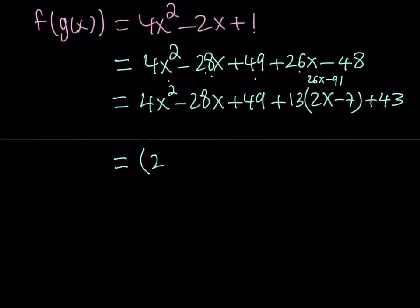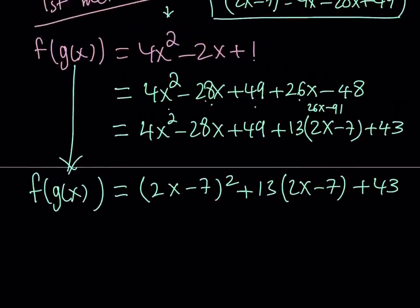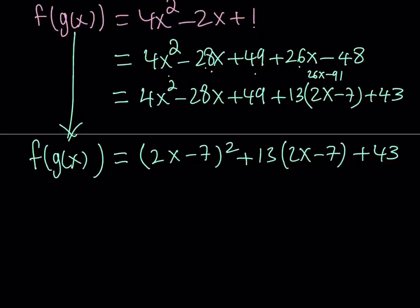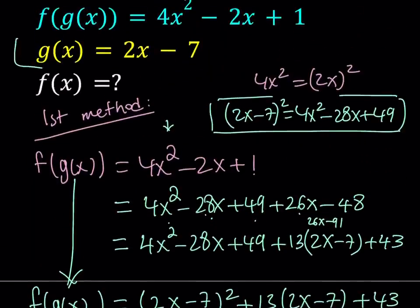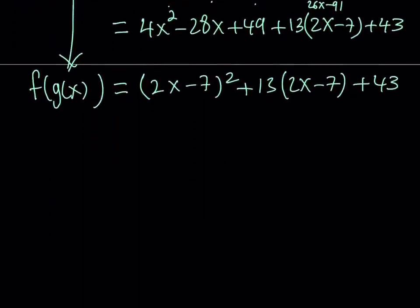So the first three terms can be written as 2x minus 7 quantity squared, and then 13 times 2x minus 7 plus 43. So this is f of g of x. Our goal is to find f of x. But why did we use 2x minus 7? Because 2x minus 7 is g of x. A lot of times we replace g of x with what it is, but this time we're going to reverse the process — we're working backwards. That's why this method is painful, but hopefully it's informative.